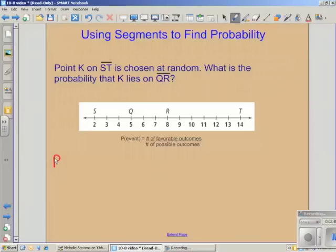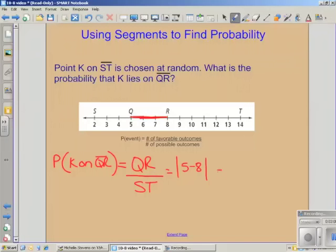The probability of point K lying on segment QR equals the length of QR over the entire length of segment ST. QR is right here. Just by looking at it, we know it's a distance of three, because the absolute value of five minus eight equals three.